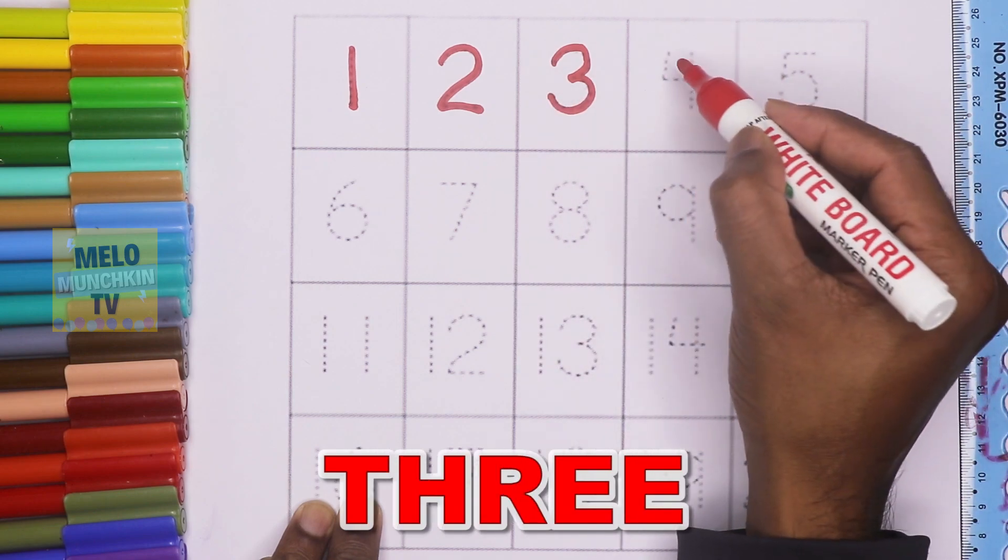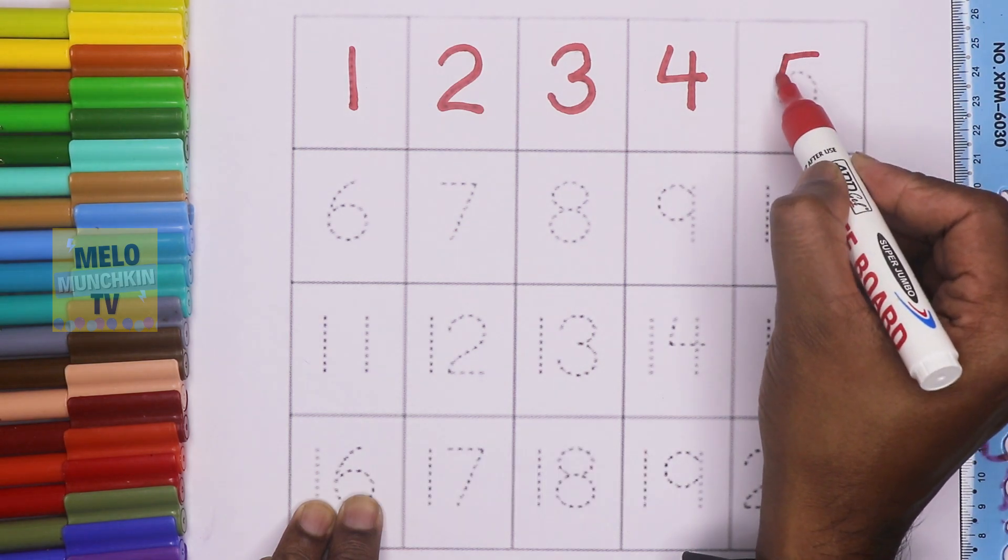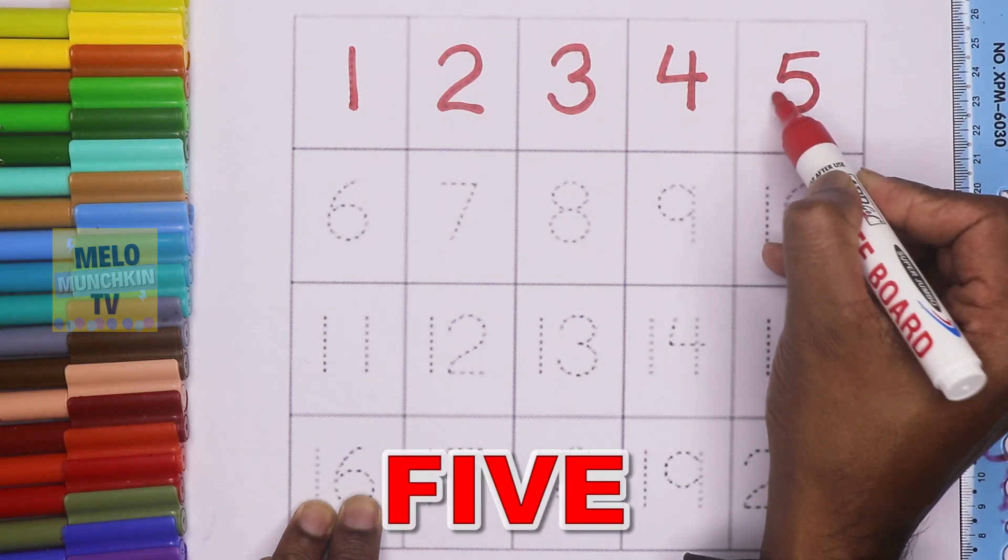This is number three. T-H-R-E-E. This is number four. F-O-U-R. This is number five. F-I-V-E. Five.